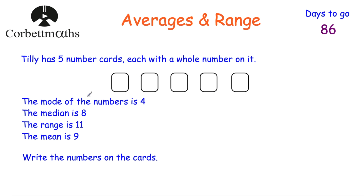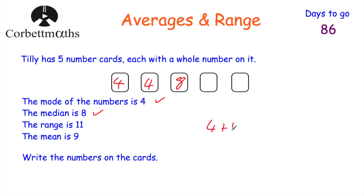The first thing I'm going to do is look at these and see what bits of information I can use to figure out some of the numbers. The median is eight, and with five values (an odd number), the middle value must be eight. The mode is four, so we need at least two fours — two of the cards must be four. The range is 11, meaning the biggest number take away the smallest equals 11. The smallest is four, so four plus 11 equals 15 — the largest number must be 15. Let's check: 15 take away 4 is 11. ✓